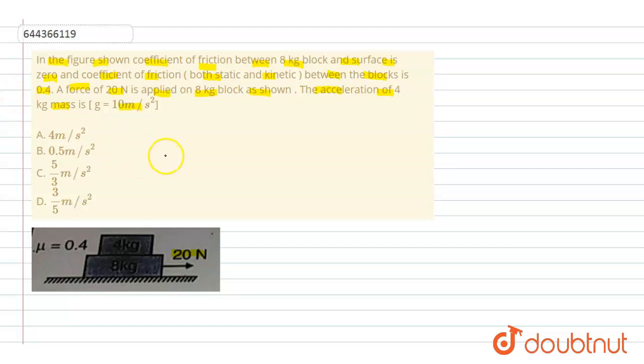In this question, there is no direct force on the 4 kg block. Only friction is responsible for the motion of the 4 kg block. So here, F is equal to μ × m × g.